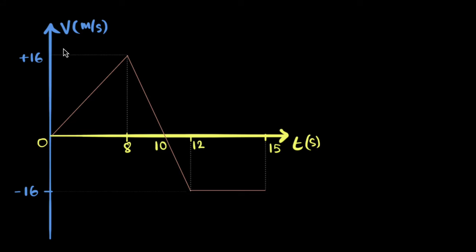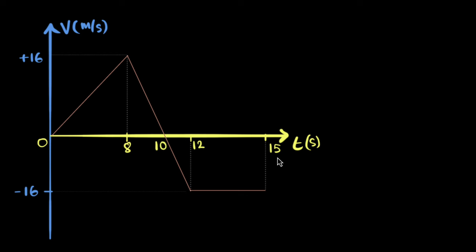Let's explore velocity-time graphs. Velocity-time graphs are basically a graph where you plot the velocity on the vertical axis and the time on the horizontal axis.